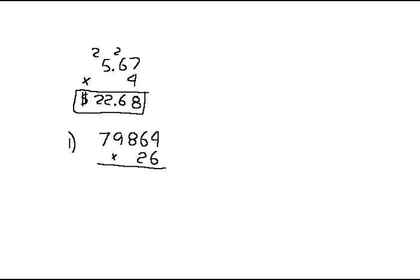Starting with 6: 6 times 4 is 24 — carry a 2. 6 times 6 is 36, plus 2 is 38 — carry a 3. 8 times 6 is 48, plus 3 is 51 — carry a 5. 9 times 6 is 54, plus 5 is 59 — carry a 5. 7 times 6 is 42, plus 5 is 47. Now the 2: 2 times 4 is 8. 2 times 6 is 12 — carry a 1. 8 times 2 is 16, plus 1 is 17 — carry 1. 9 times 2 is 18, plus 1 is 19 — carry 1. 7 times 2 is 14, plus 1 is 15.